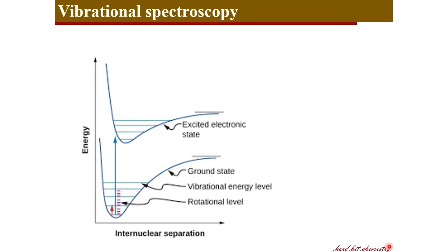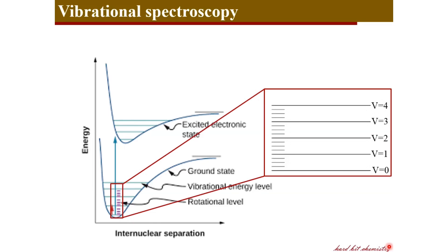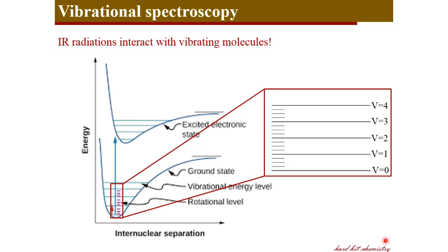The potential energy diagrams for molecules in the ground and excited electronic states are shown here. If you look closely within one of the levels, for example in the ground state, you can see the electronic state is characterized by several vibrational levels inside, and each of these vibrational levels consists of several rotational levels. The energy difference between the vibrational levels corresponds to the energy of infrared radiation of the electromagnetic spectrum, and therefore infrared radiations can interact with the energy of a vibrating molecule.